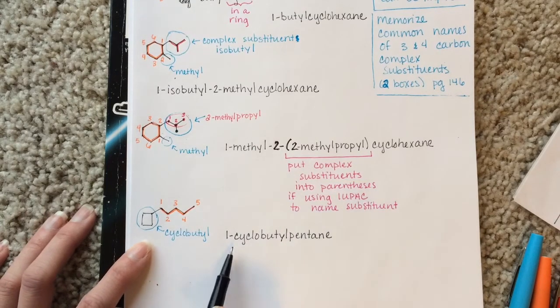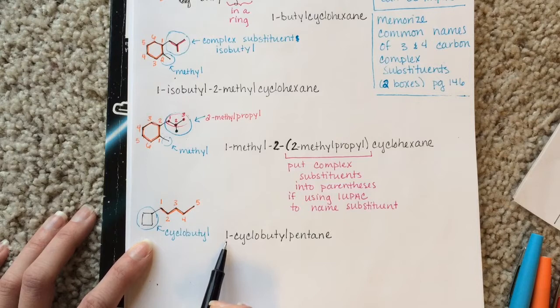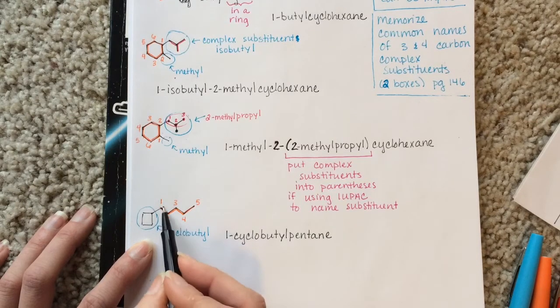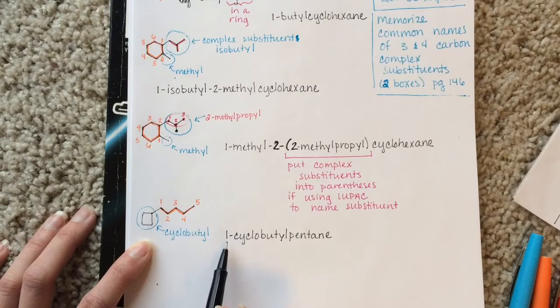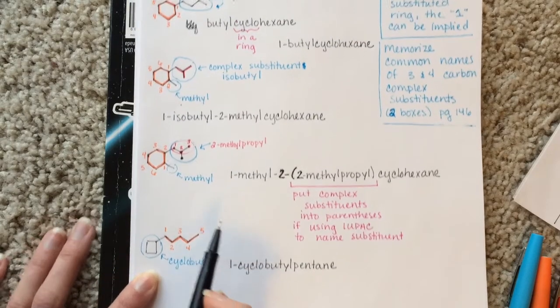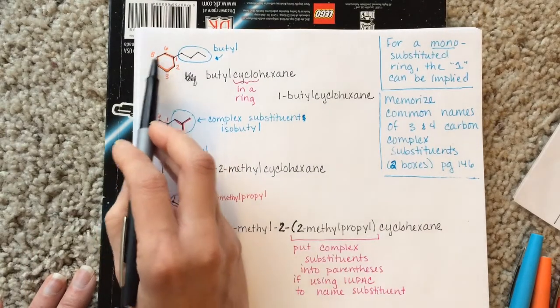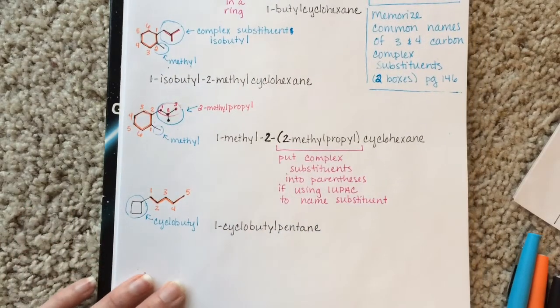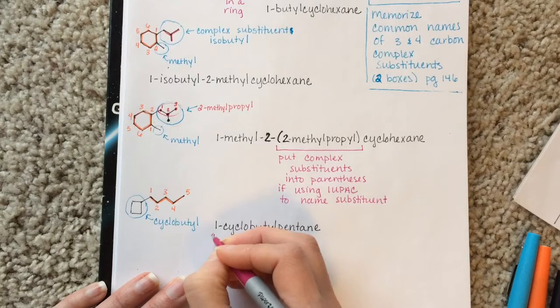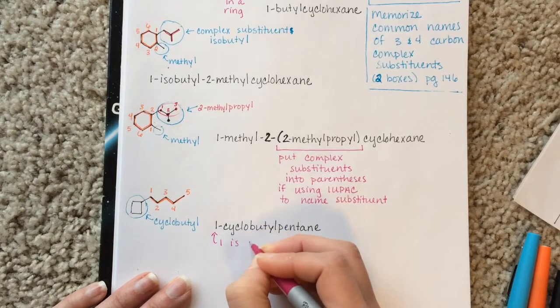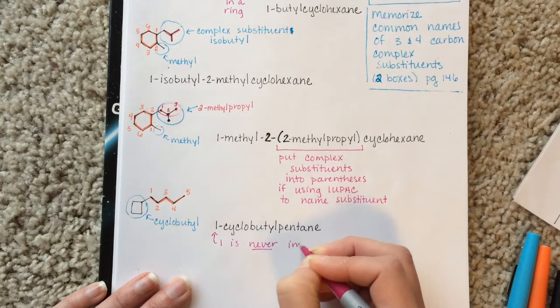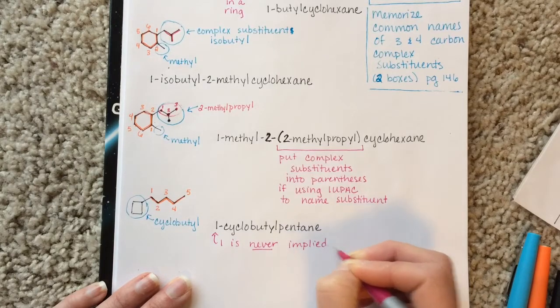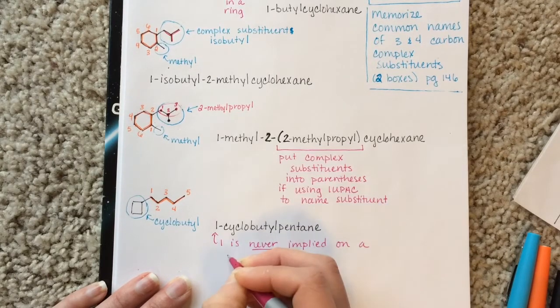Remember, again, you cannot leave the one off because this is a straight chain. You can't leave the one off of a straight chain. You can only leave the one off when you have a ring as your parent chain.